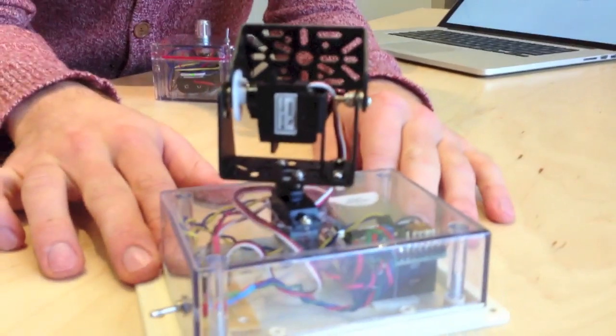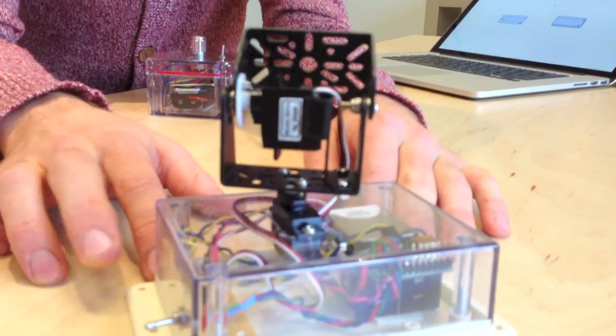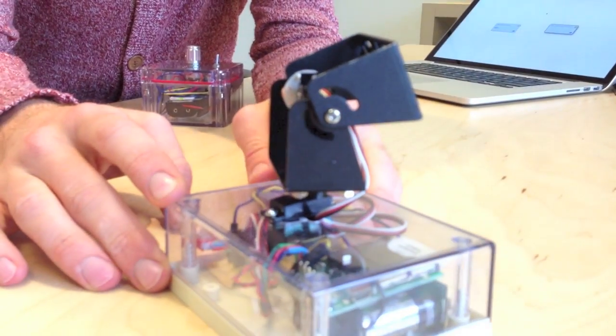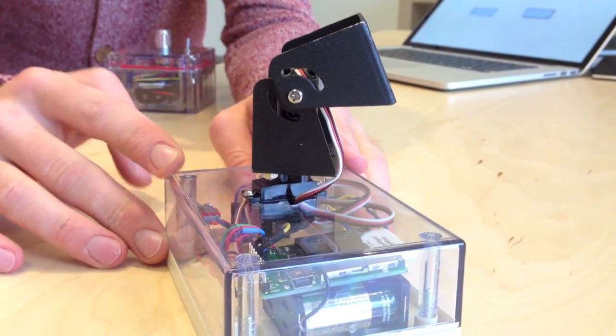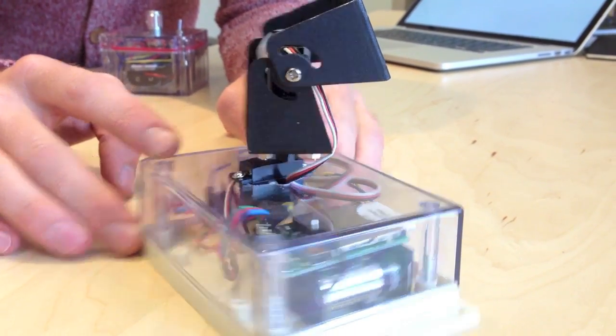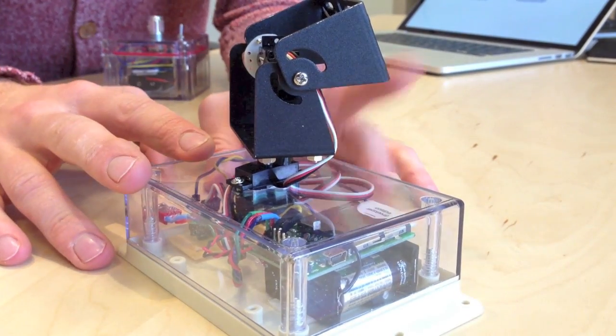It's the Minimum Implementation of an Imp Controlled Robot. What we've got in here is one of our April Imp Breakout Boards, powered by a couple of CR123 camera batteries. And we've got an instructable on how to build this whole box that's going up today.